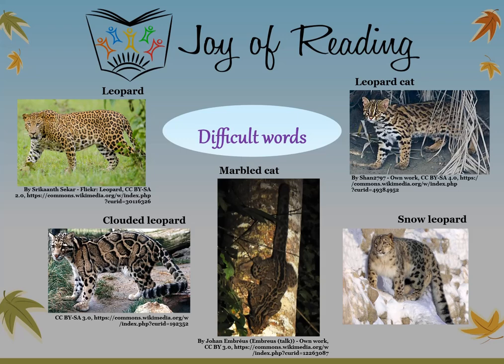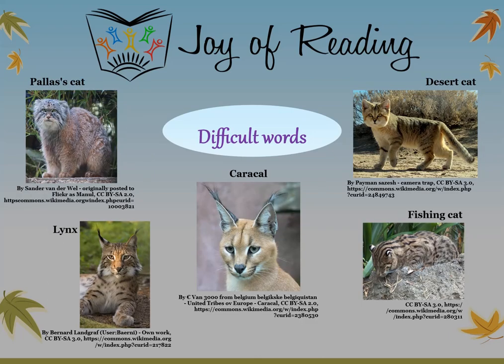The difficult words in this story are: leopard — a large wild cat with spots on its body. Leopard cat — a small wild cat about the size of a house cat with spots on its body and stripes on its forehead. Clouded leopard — a wild cat with spots forming a clouded pattern which climbs trees easily. Marbled cat — a small wild cat with spots that fade to dark areas and is a good climber. Snow leopard — a large wild cat that lives in the mountains. Pallas cat — a small wild cat that lives in the mountains. Desert cat — a small wild cat that lives in sandy deserts.